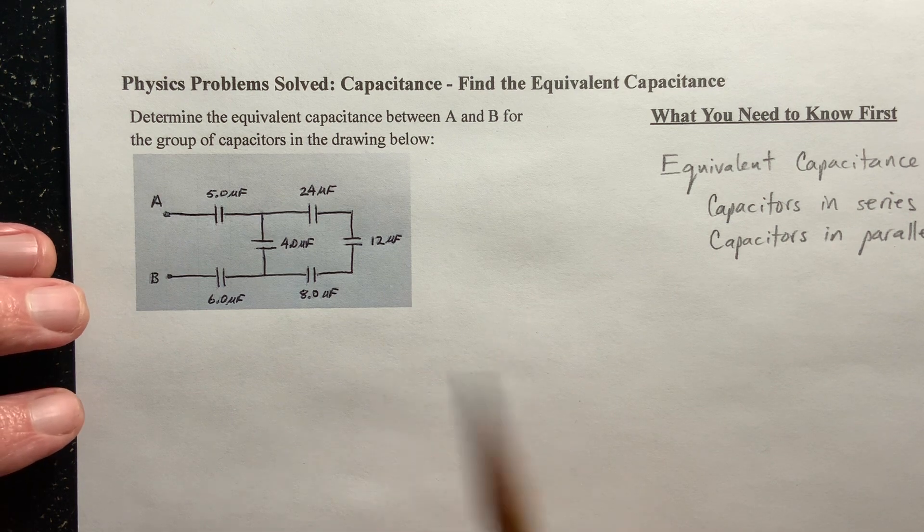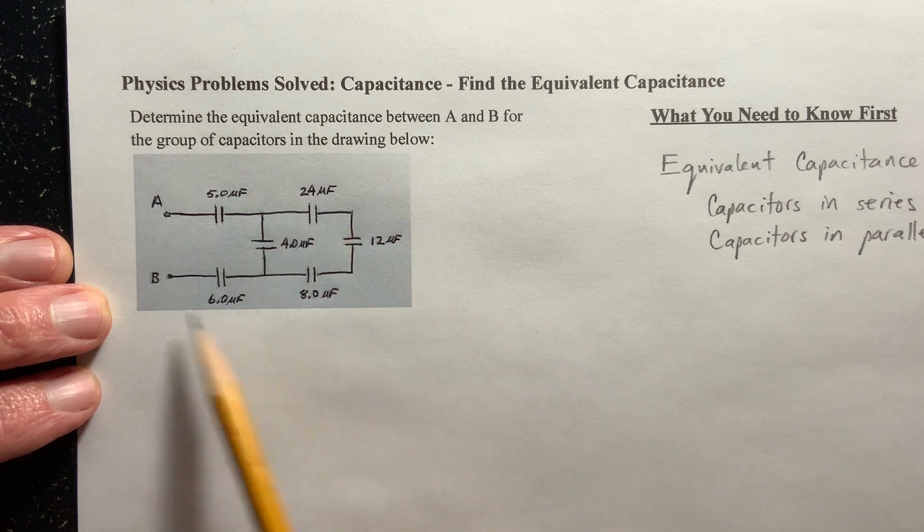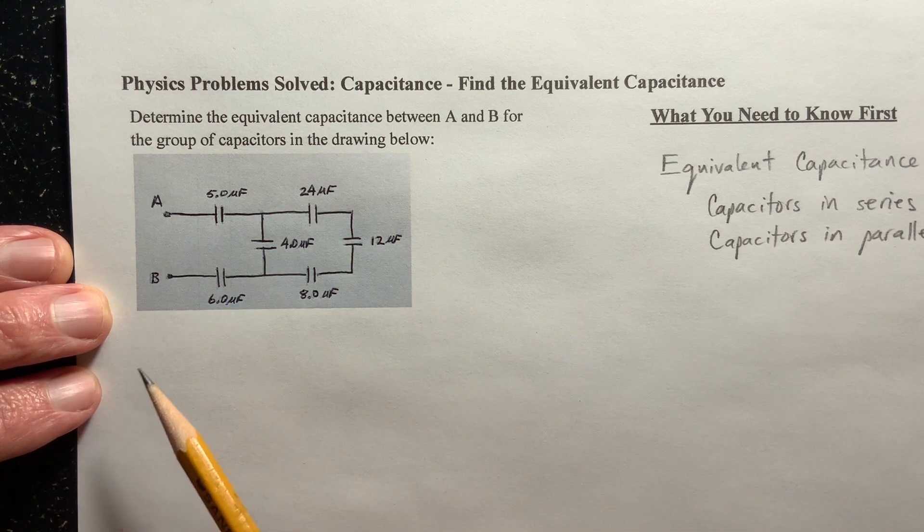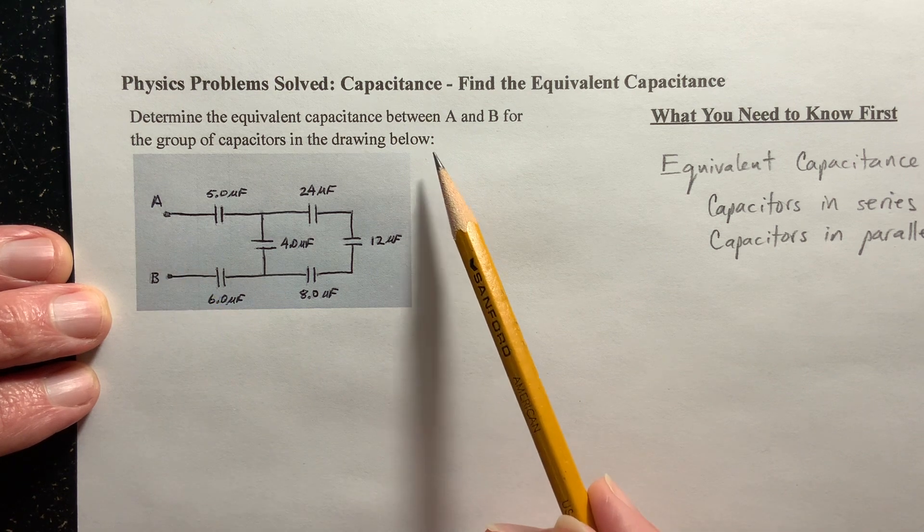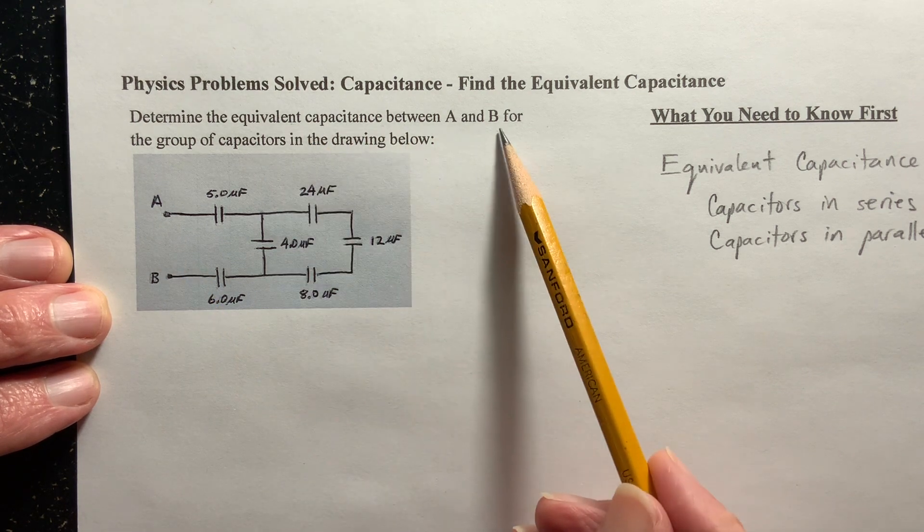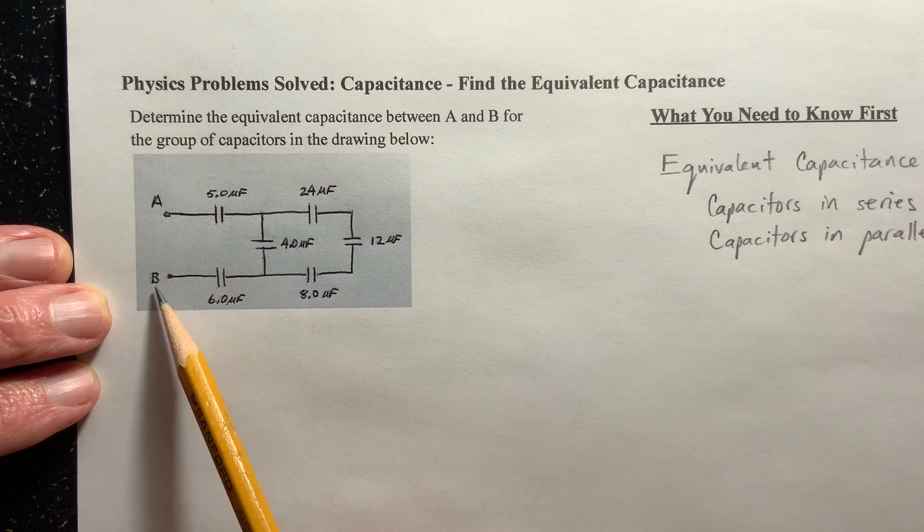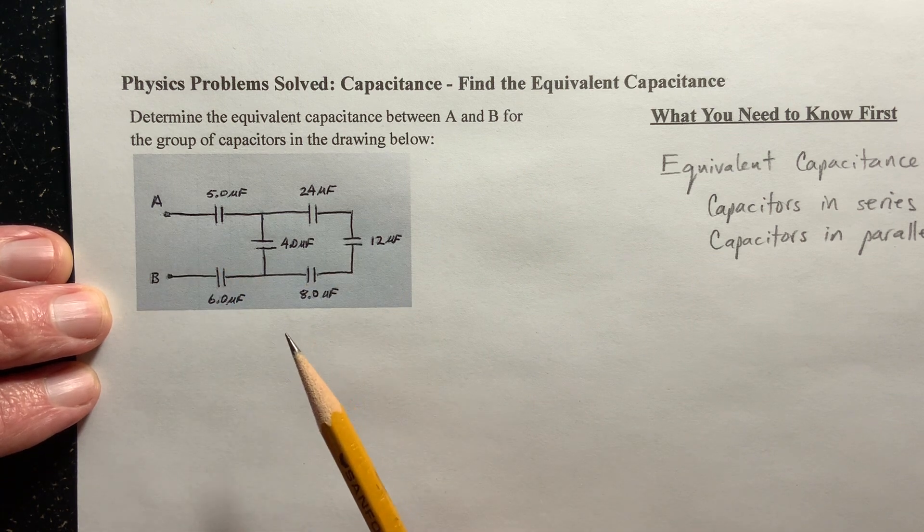Here's what we've got. We've got a bunch of capacitors here, a group of capacitors, and we want to know what is the equivalent capacitance between A and B for this group of capacitors.